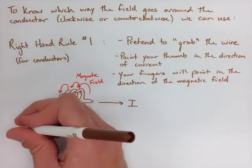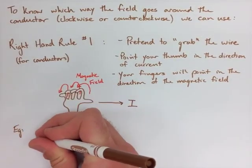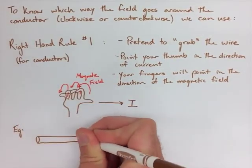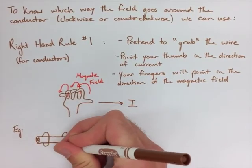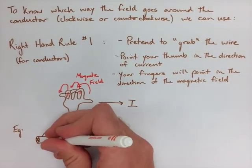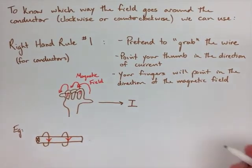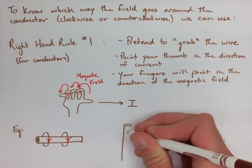Now with the first example here, we've got a current wire and we've got an X on the end, so we know our current's going to the right, and we need to know which way these field lines are going. If we put our thumb to the right, we know the field lines are going down.